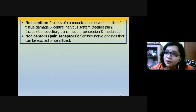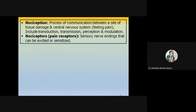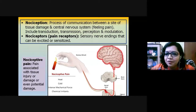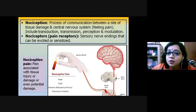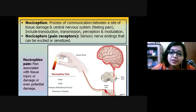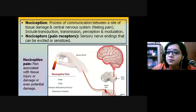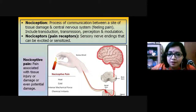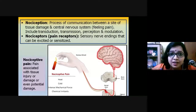For nociception, there must be pain receptors — these are sensory nerve free endings that are excited or sensitized. When this happens, we have what is known as nociceptive pain: pain associated with tissue injury or damage, or even potential damage, occurring at a particular target tissue. The nociceptive stimulus is then targeted through the spinal cord.